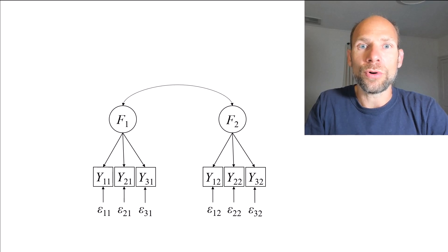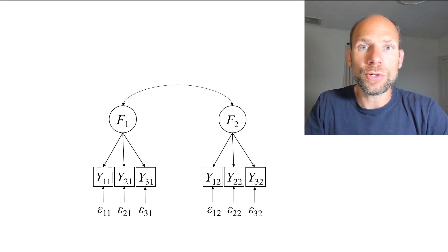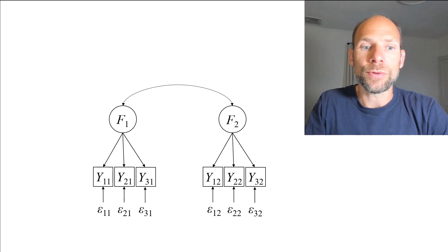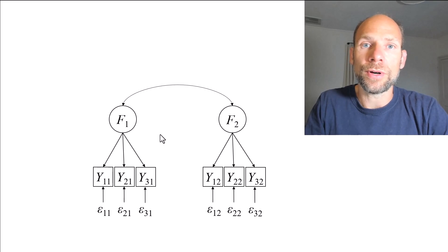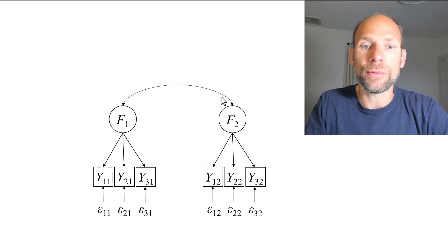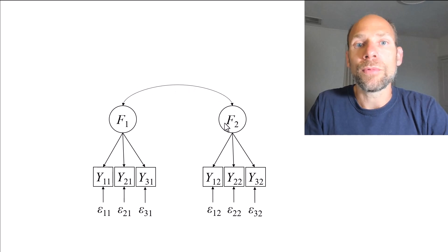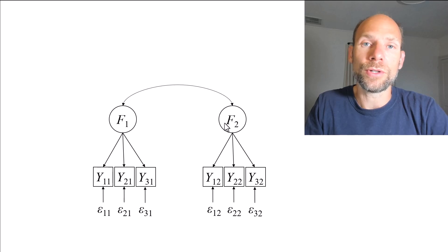Let's talk about why you would do this at all first, and what are situations in which you would allow for correlated errors. One situation is when you use longitudinal data and you use a longitudinal confirmatory factor analysis model like the one shown here. Assuming we have three measured variables for a given attribute or construct — y1, y2, and y3 — and we measure those indicators repeatedly on two measurement occasions. F1 and F2 then represent the error-free scores or latent scores on that attribute measured at two different time points, where F1 and F2 represent the same construct at two time points and are correlated over time, reflecting the potential stability of true inter-individual differences across time.